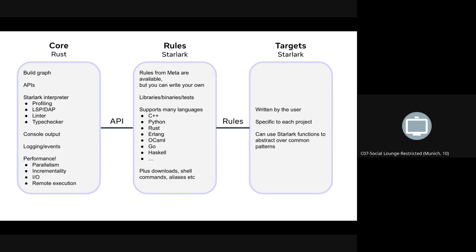The core of Buck2 is a Buck2 binary written in Rust. It provides the APIs which the rules use, and a Starlark interpreter which is also available as a separate open source library. We've spent a lot of time improving the developer experience for Starlark — particularly our version of Starlark — with things like profiling, LSP, debugger support, linter, type checker. Statically typed Starlark is a thing, and we have it. It's great.